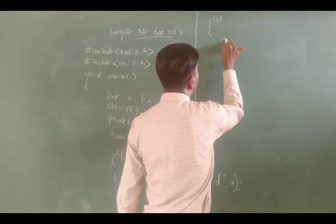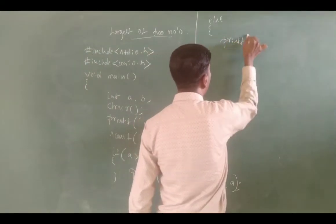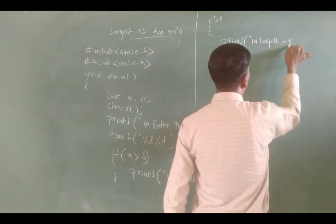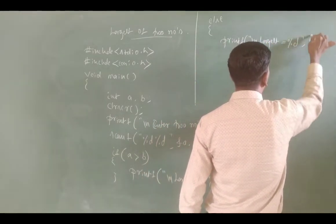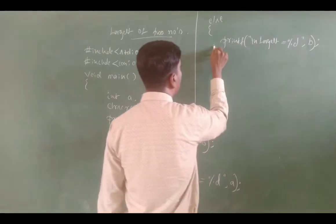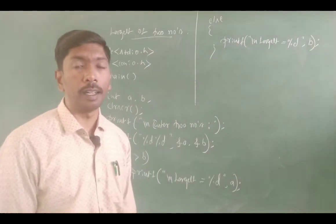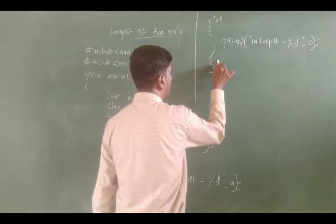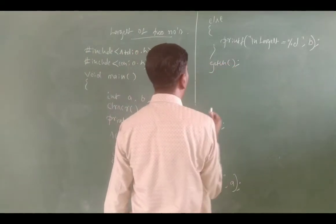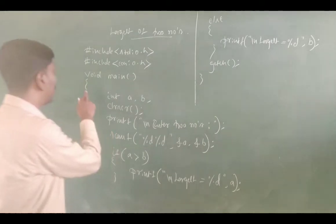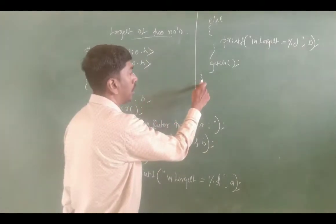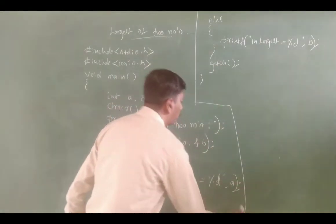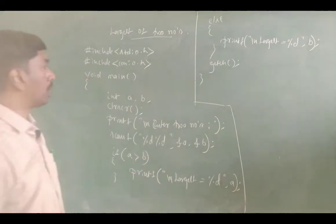So, printf newline 'Largest = %d', B. B is the largest. Then close the else block, and close the main function. This is the complete program.